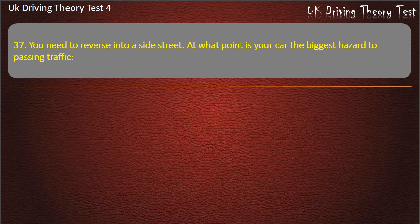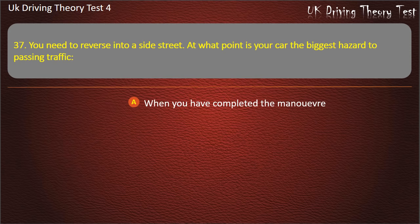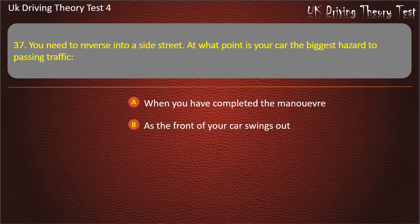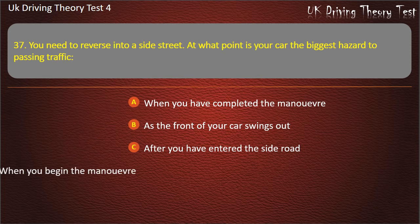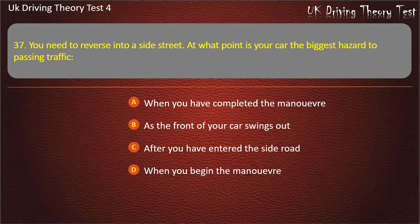Question 37. You need to reverse into a side street. At what point is your car the biggest hazard to passing traffic? When you have completed the manoeuvre; as the front of your car swings out; after you have entered the side road; or when you begin the manoeuvre. Answer: As the front of your car swings out.